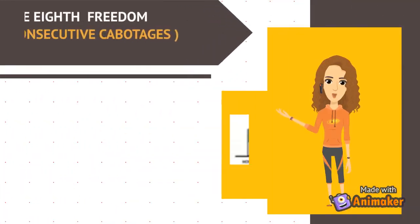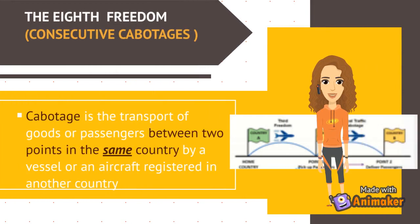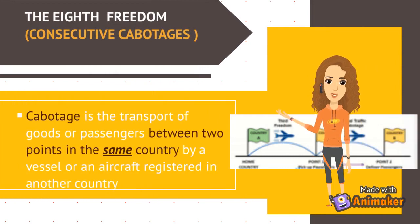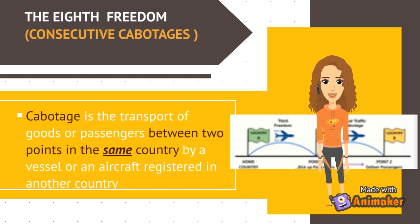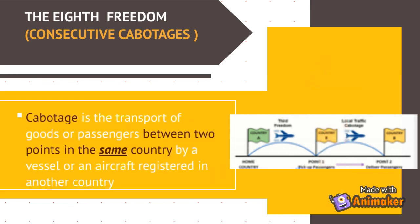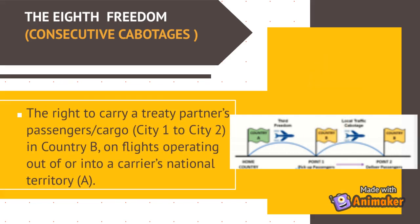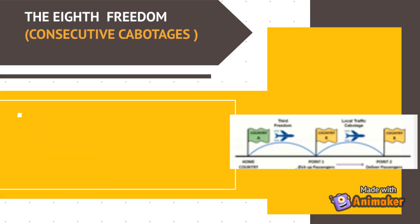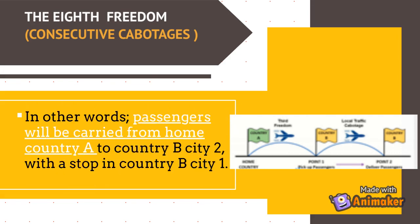The eighth freedom is consecutive cabotage. Cabotage is the transport of goods or passengers between two points in the same country by a vessel or aircraft registered in another country. The eighth freedom is the right to carry a treaty partner's passengers and/or cargo between city 1 and city 2 in country B, on flights operating out of or into the carrier's national territory A — with a stop in country B city 1 on a flight from home country A to city 2.